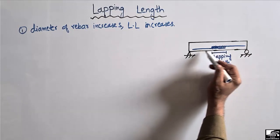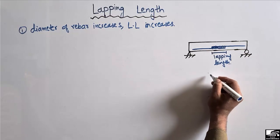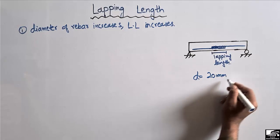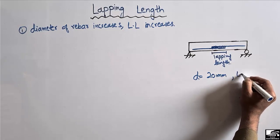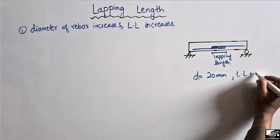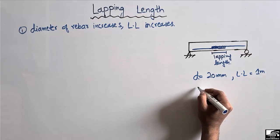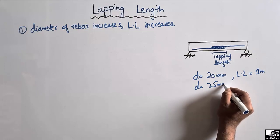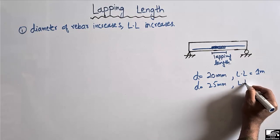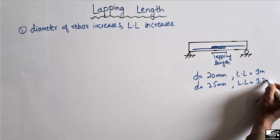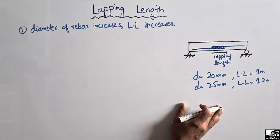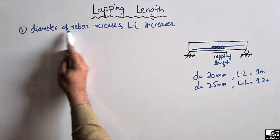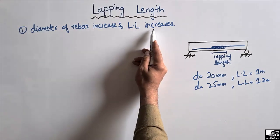For example, if my steel bar has a diameter of 20 millimeters, the lapping length might be 1 meter. Now if I use a 25 millimeter diameter bar, the lapping length would increase to perhaps 1.2 meters. So the lapping length is directly proportional to the diameter of the rebar.